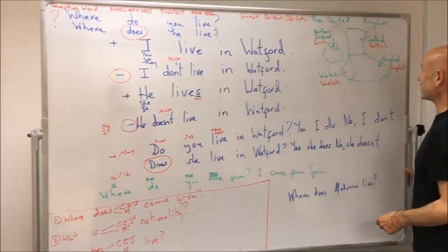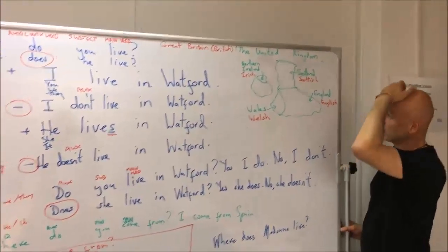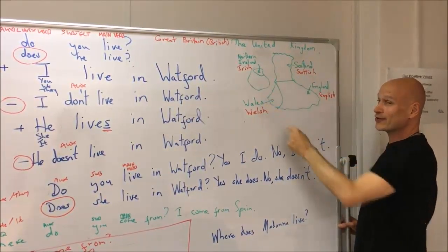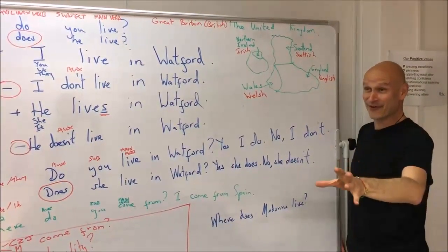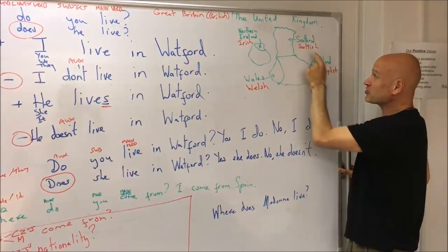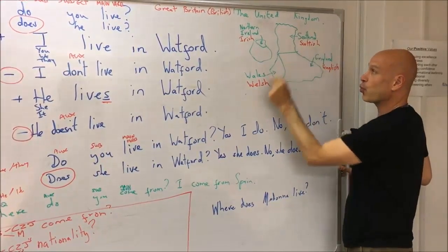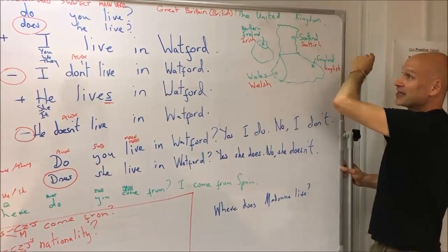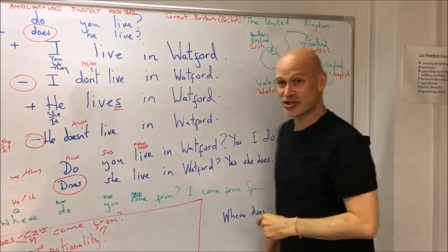Then we looked at the United Kingdom. Here's a perfect drawing of the United Kingdom. We've got England, Ireland, Scotland, and Wales at the moment — though this might get very old soon and change. We looked at the nationalities: English, Irish, Scottish, Welsh. Remember, we can call it the United Kingdom or Great Britain, and I can say I'm English or British.